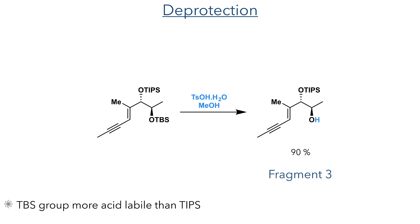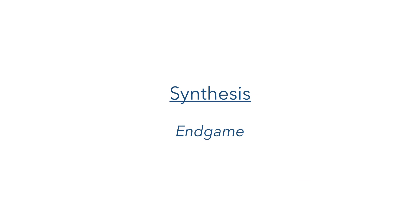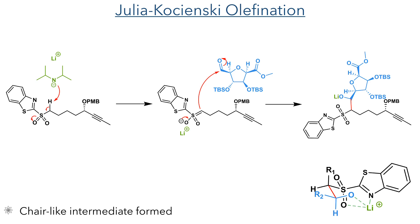With this alkyne now in place, the TBS group was selectively deprotected using tosylic acid and methanol to form fragment 3 in a 90% yield. With these three fragments now complete, they could enter the endgame of the synthesis. This began with a Julia-Kocienski olefination between fragments 1 and 2.